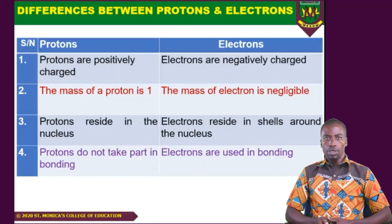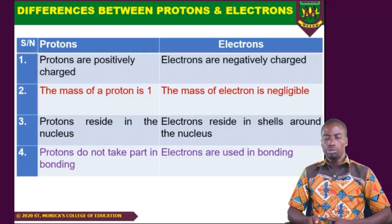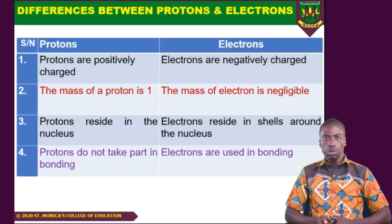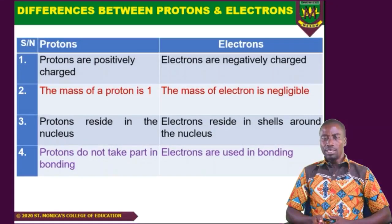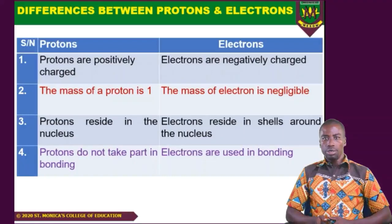The protons are positively charged and electrons are negatively charged, as shown in the subatomic particle table. The mass of the proton is 1, but that of the electron is basically negligible — divide one by 1840 and it becomes negligible.